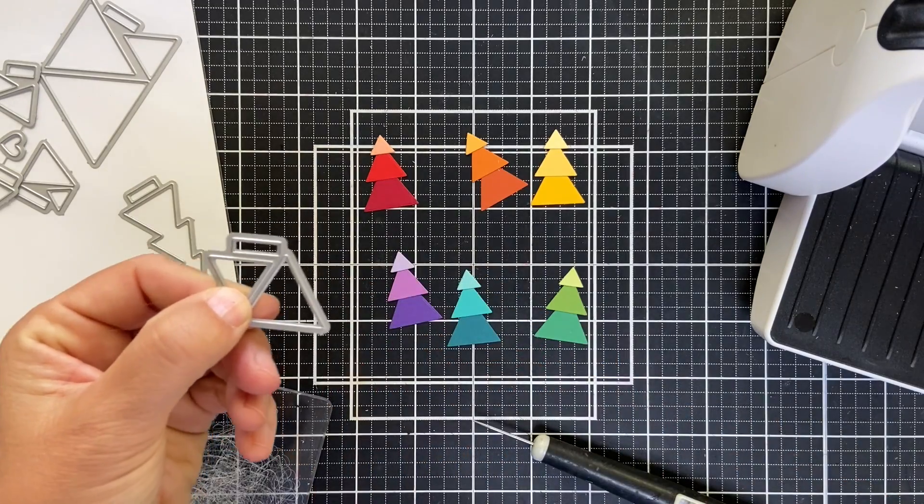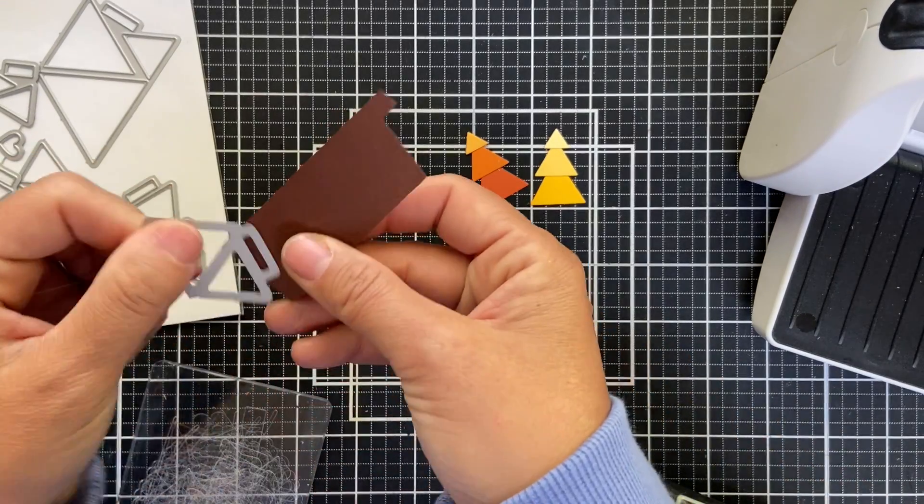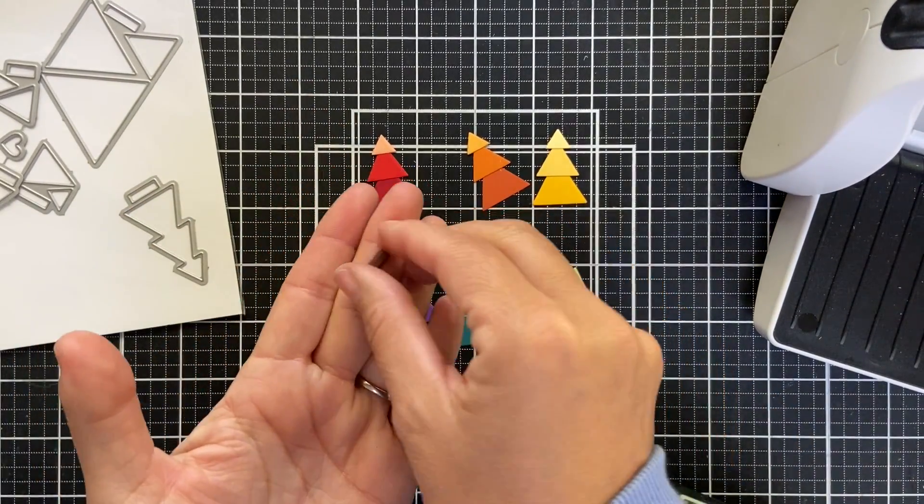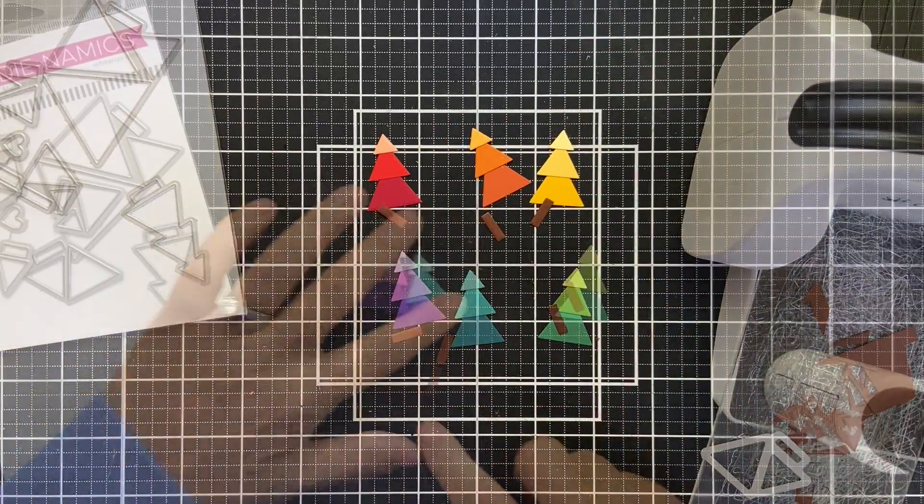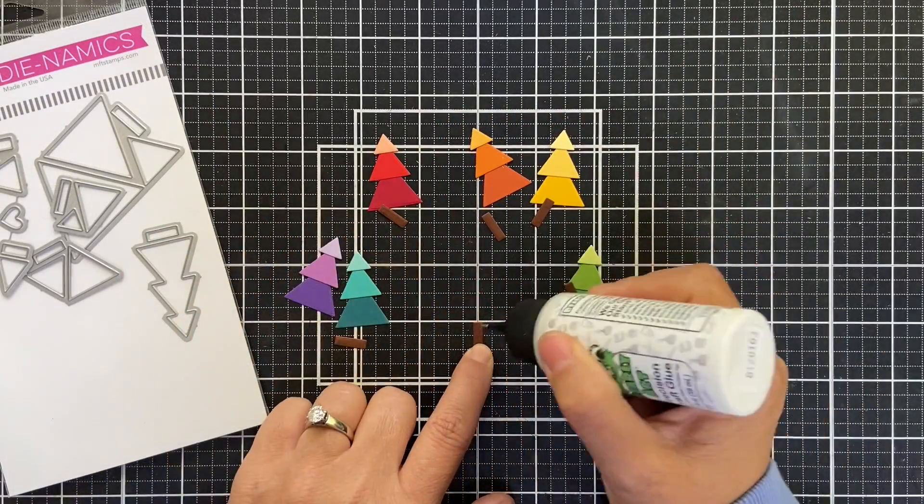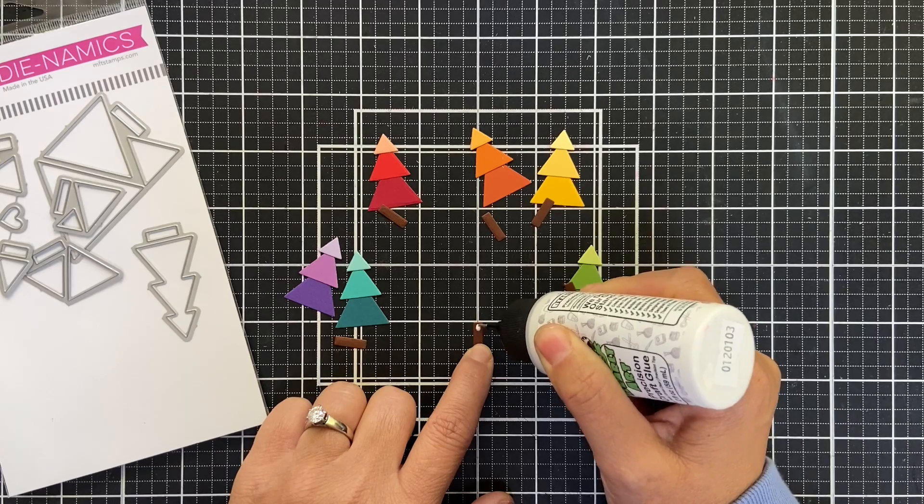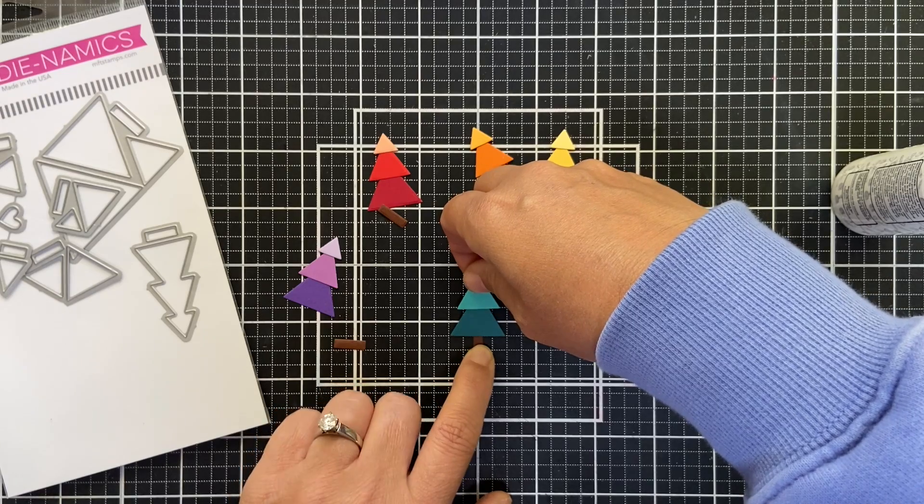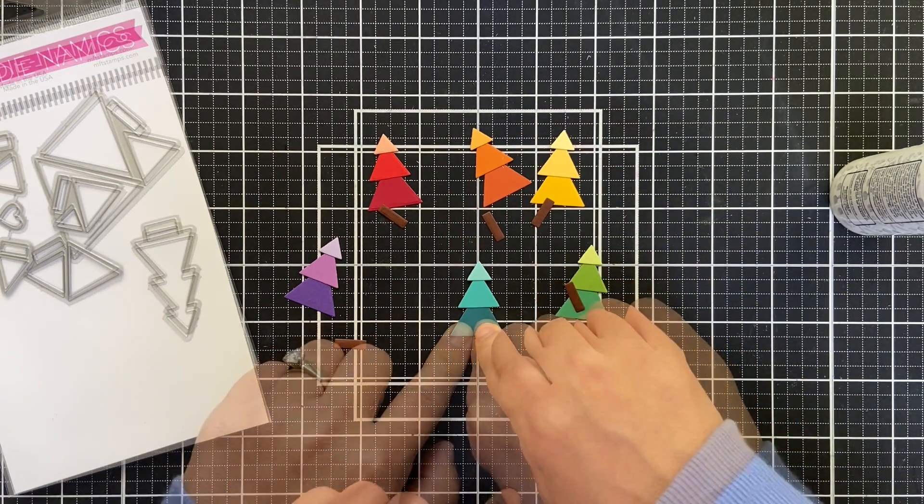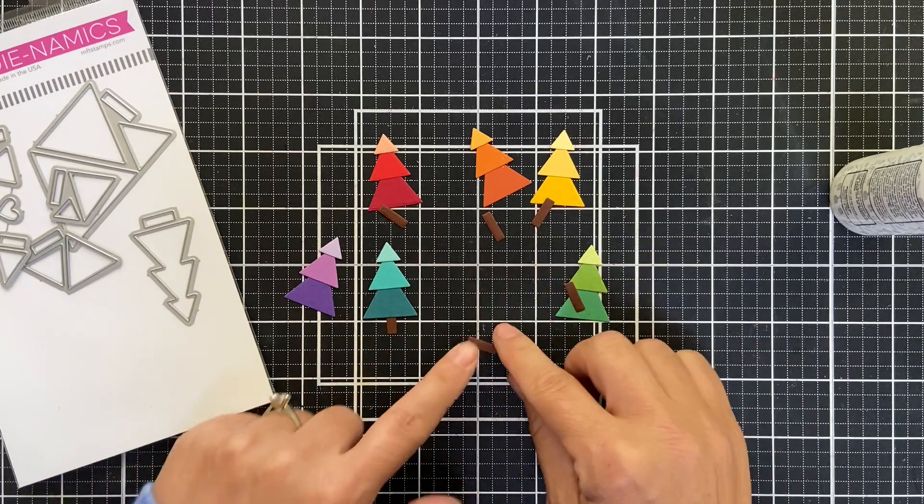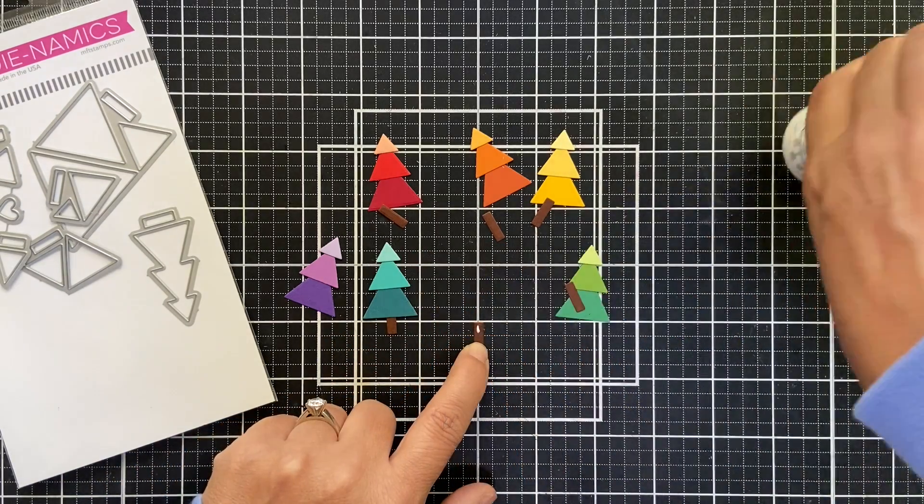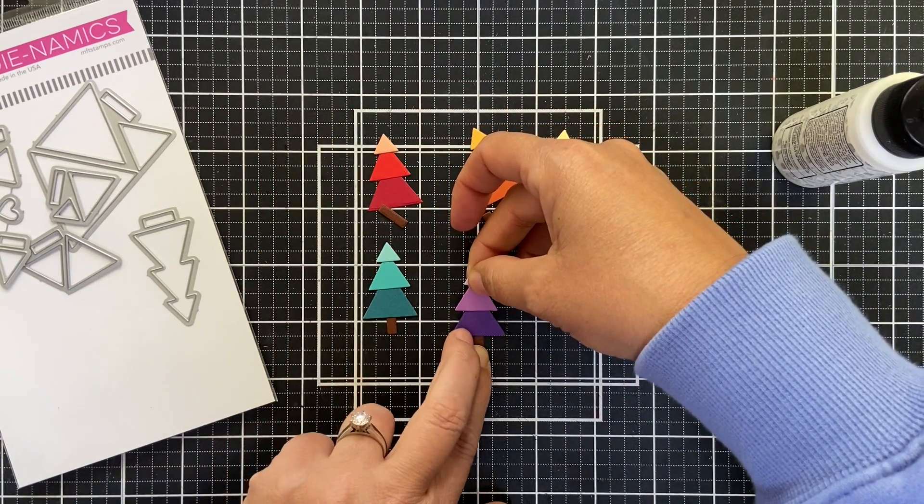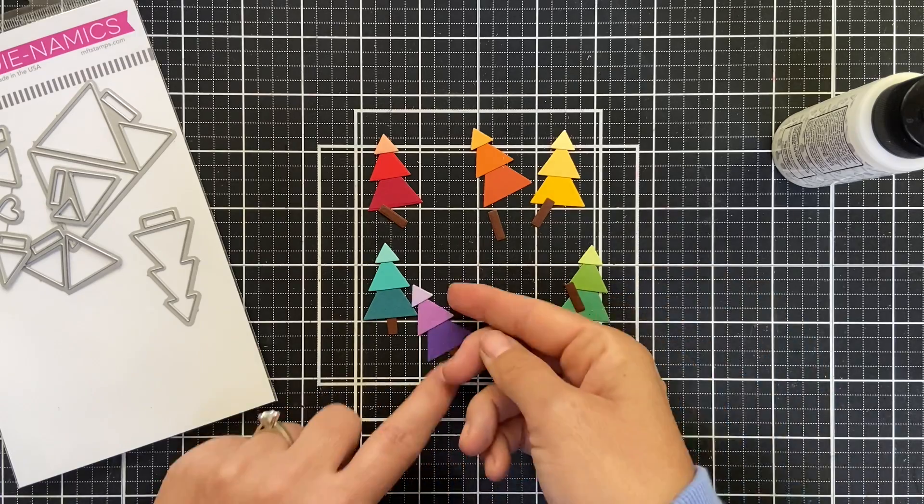This might not be one you're going to want to mass produce, but it is one that's gonna make you smile. So I got these all together. Now there are several different stems or trunks for the trees - it's optional, you don't have to add a trunk, but I thought hey, why not? Again I'm using that grid mat to make sure that my trunk is centered in the tree and also that I get the trunk at the same height.